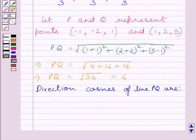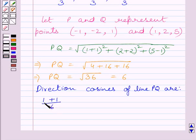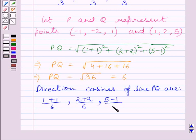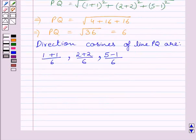Now, we will find the direction cosines of line PQ. The direction cosines of line PQ are: (1 plus 1) upon 6, (2 plus 2) upon 6, and (5 minus 1) upon 6. Simplifying, the direction cosines of line PQ are 1 upon 3, 2 upon 3, 2 upon 3.